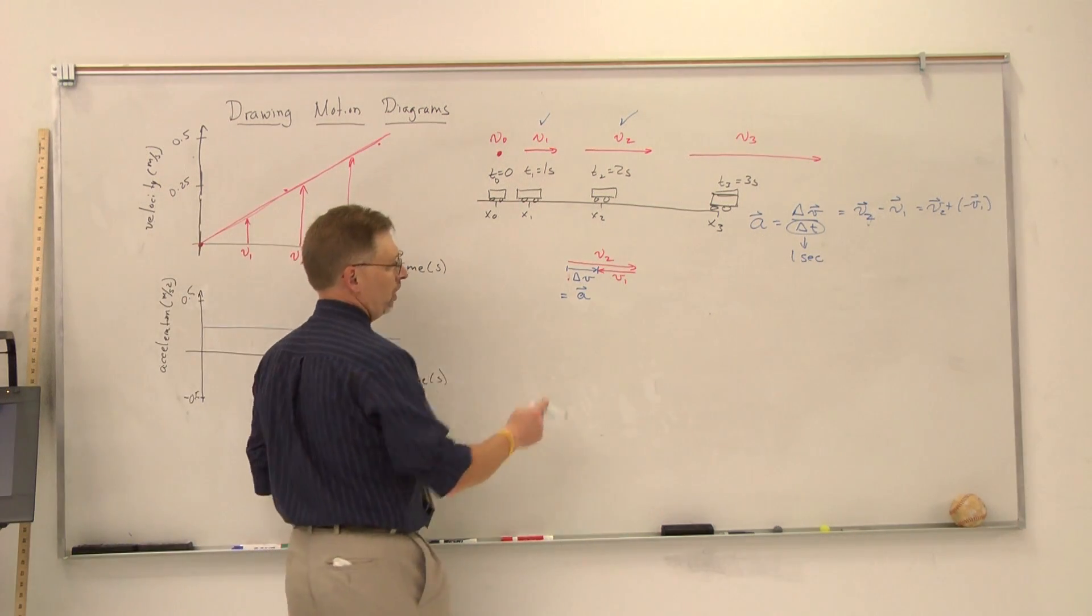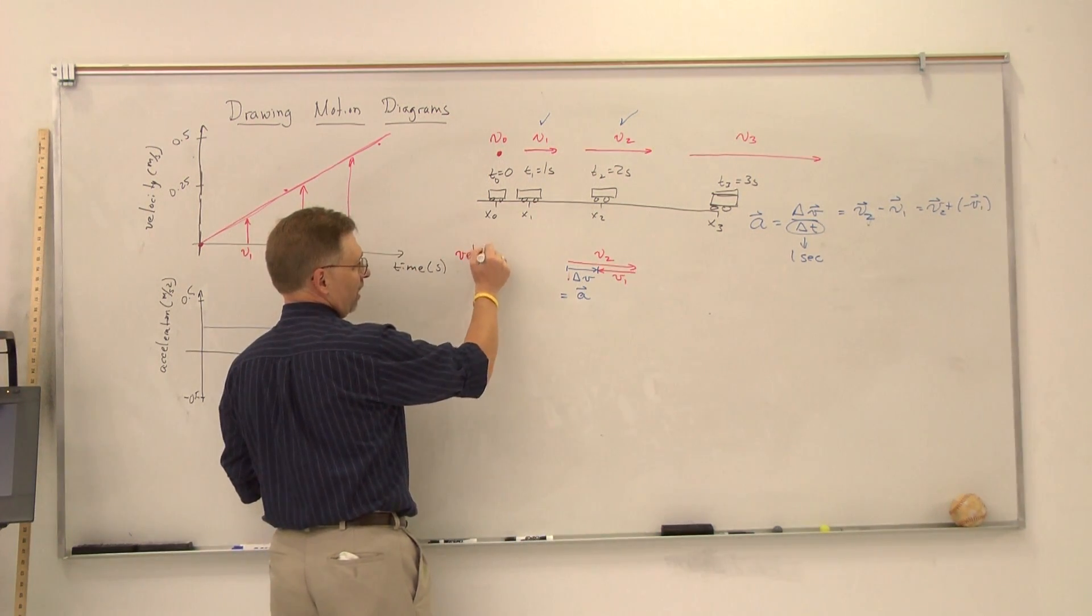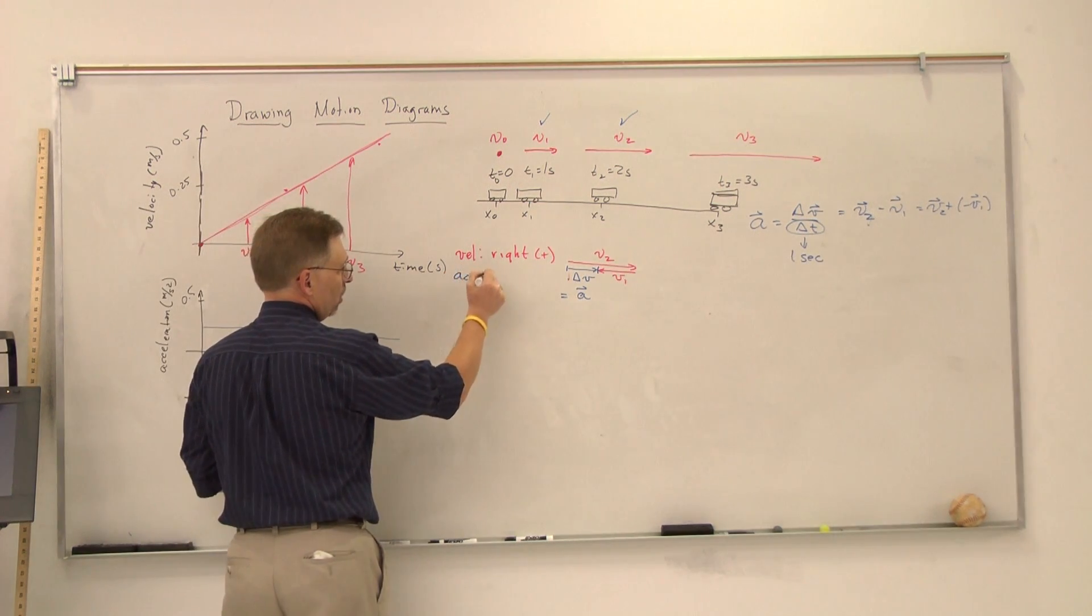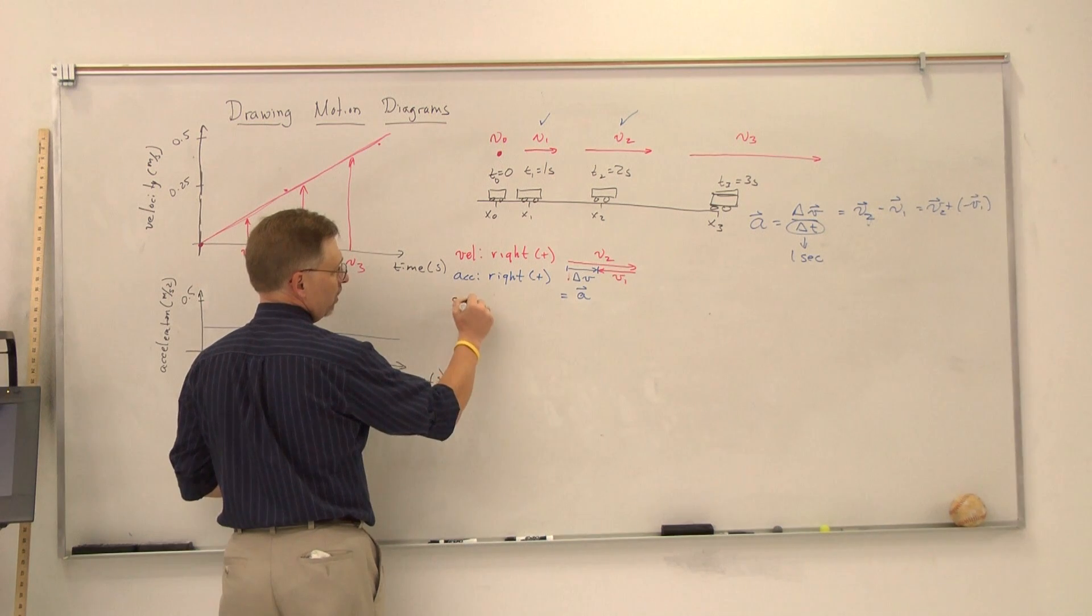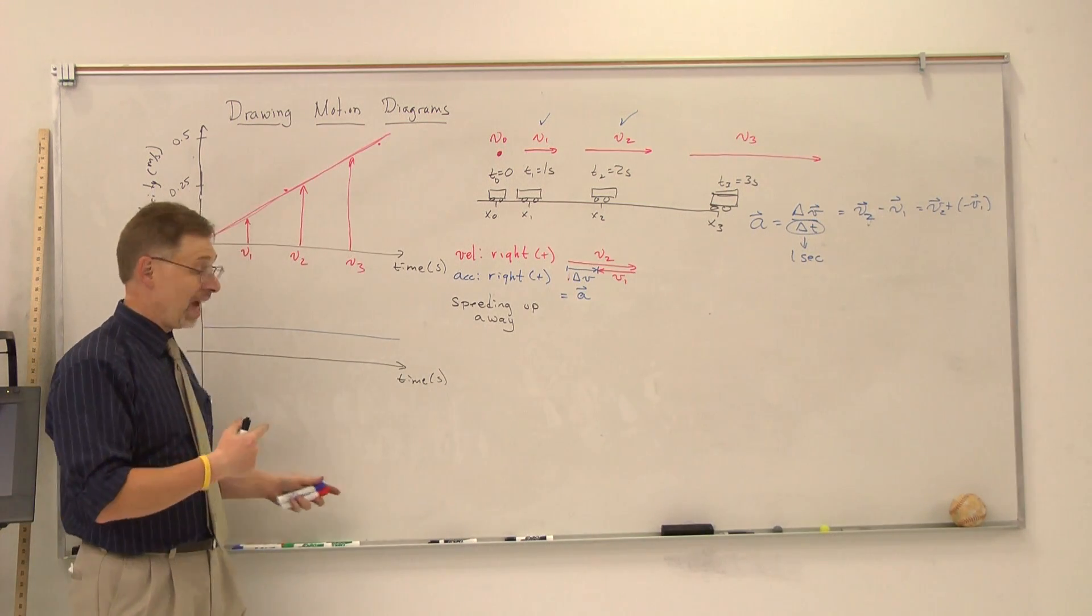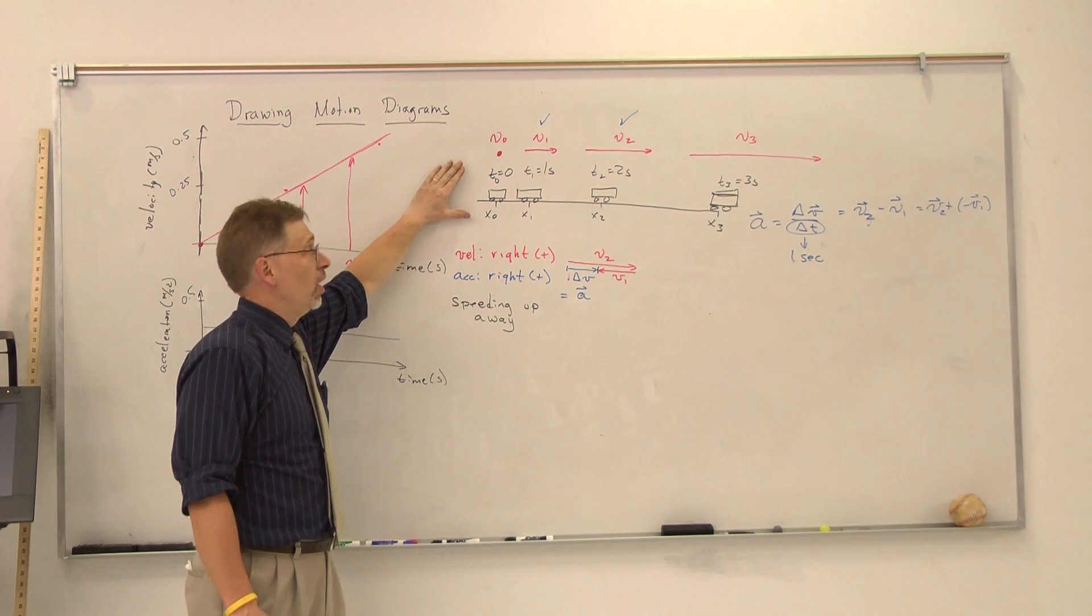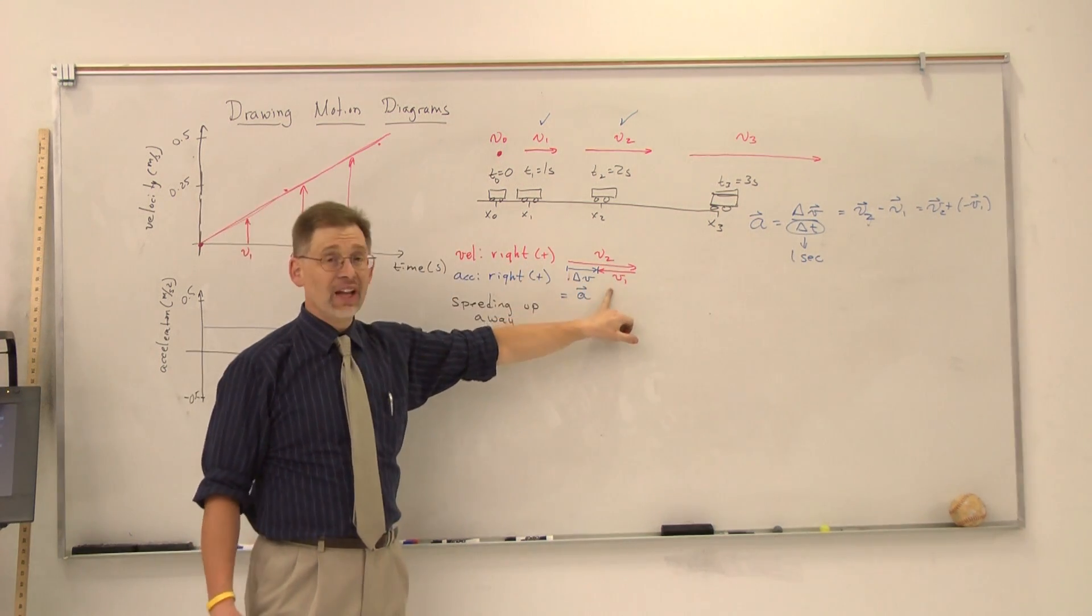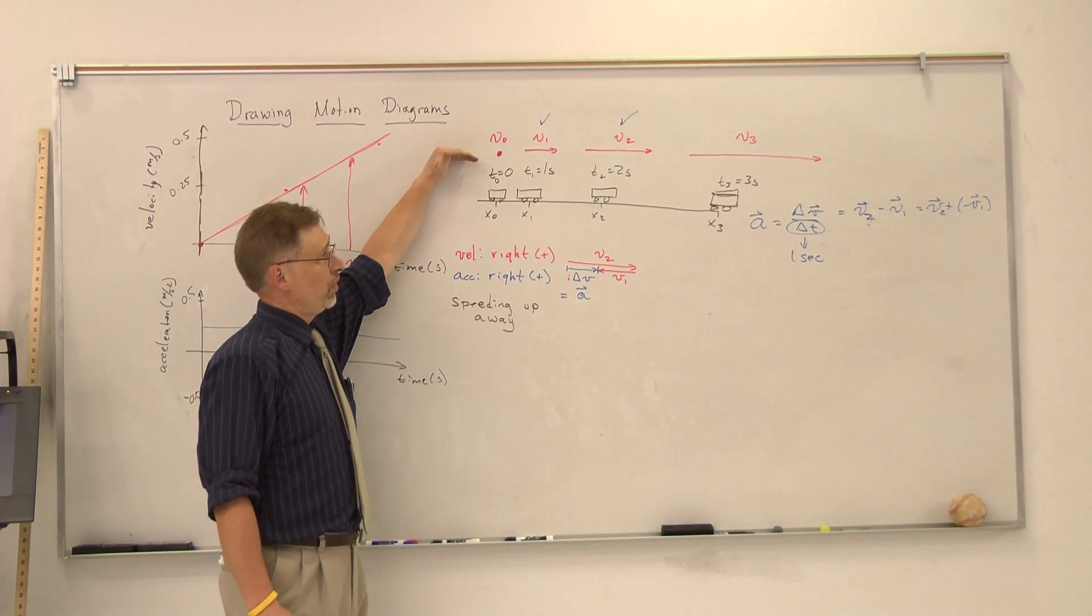What we've done is our blue arrow here actually tells us our acceleration. In this particular instance, we can say that our velocity is to the right, and positive is given by the graph pointing away from the motion detector.